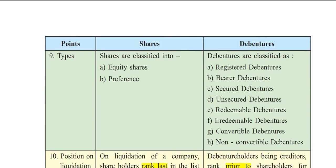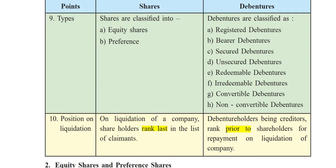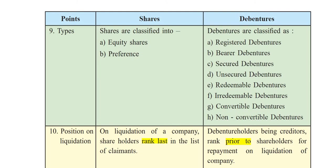The ninth point is types. Shares are classified into two types: equity shares and preference shares. Debentures, on the other hand, are classified into many types: registered debentures, bearer debentures, secured debentures, unsecured debentures, redeemable debentures, irredeemable debentures, convertible debentures, and non-convertible debentures. You need to remember all these types.